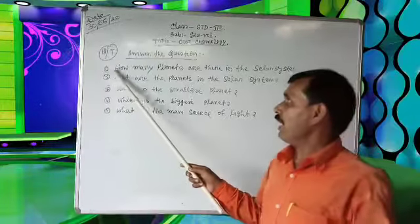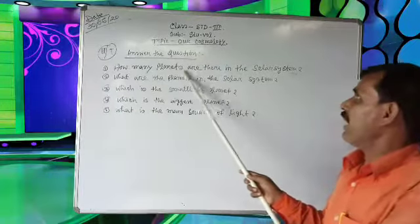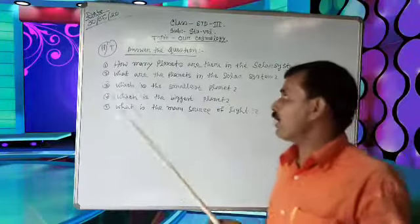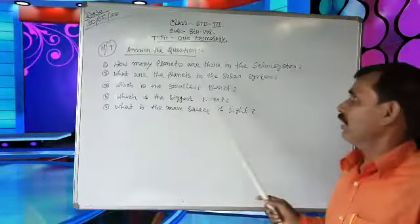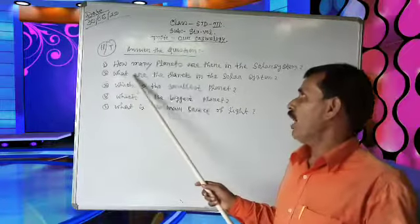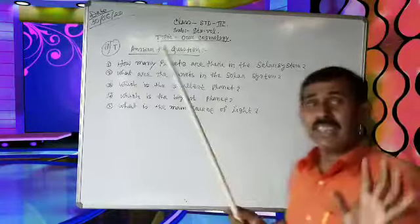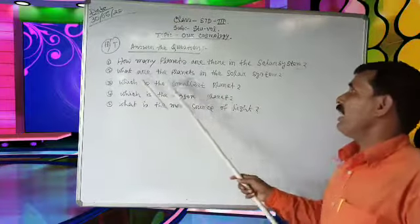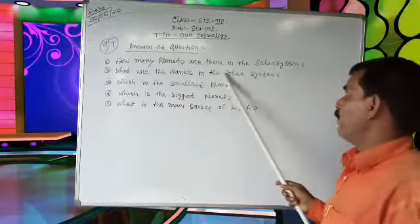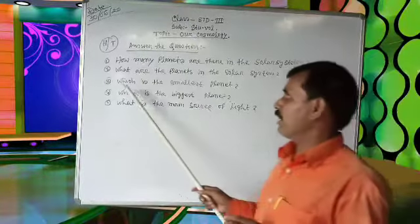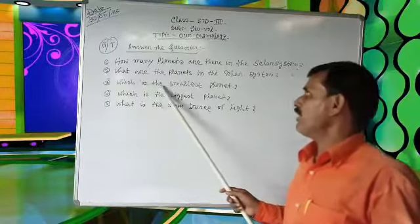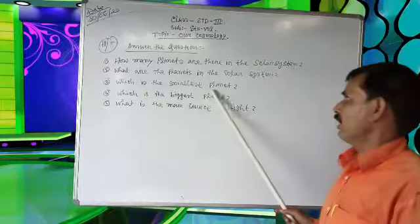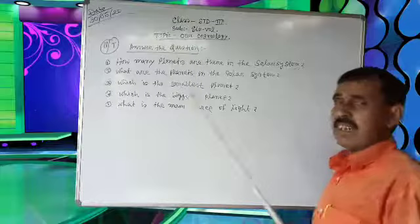1. How many planets are there in the solar system? 2. What are the planets in the solar system? 3. What is the smallest planet?